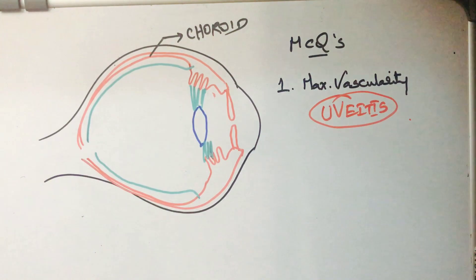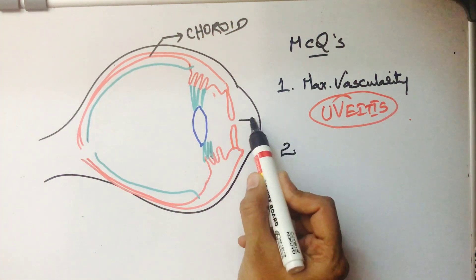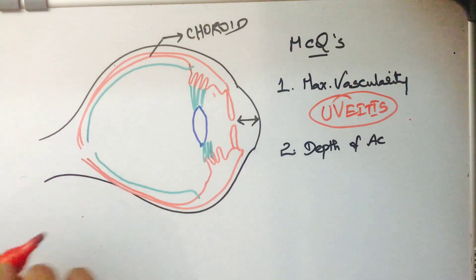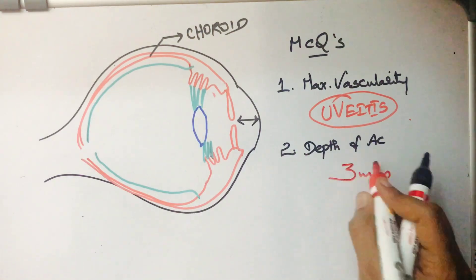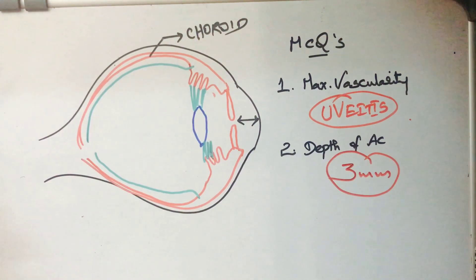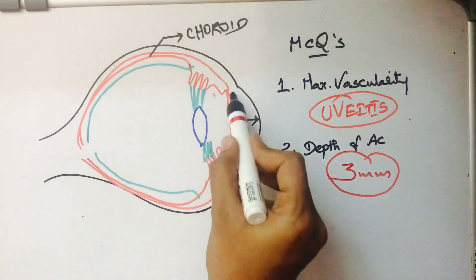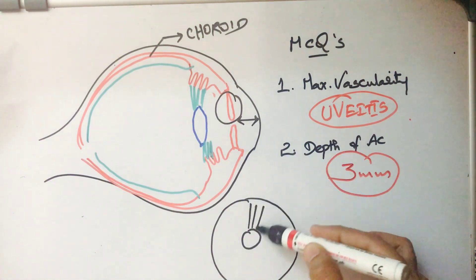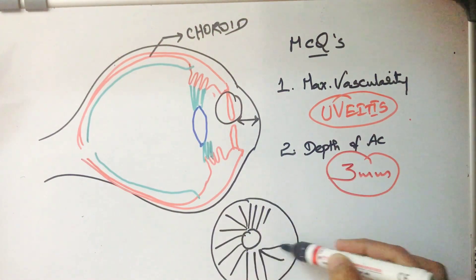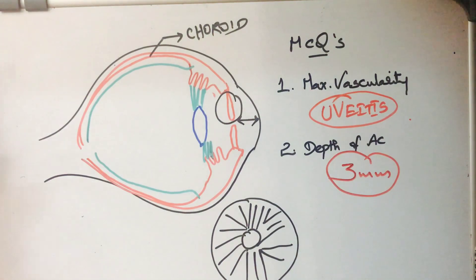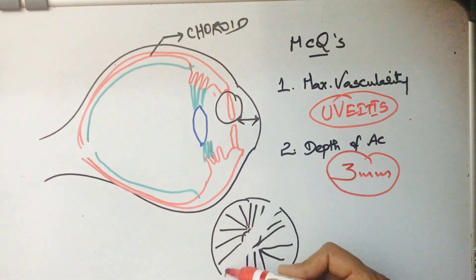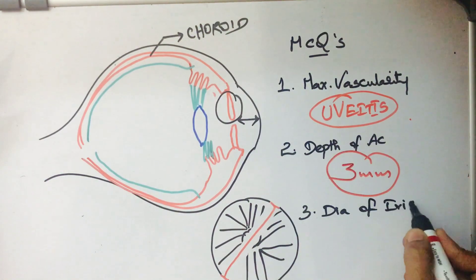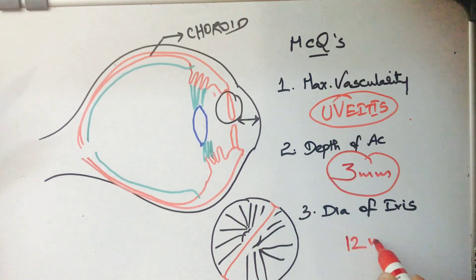This results in a condition called uveitis - that is, inflammation of the uveal tract. Second important MCQ: the depth of the anterior chamber is 3 millimeters. What is the diameter of the iris? It is 12 millimeters.